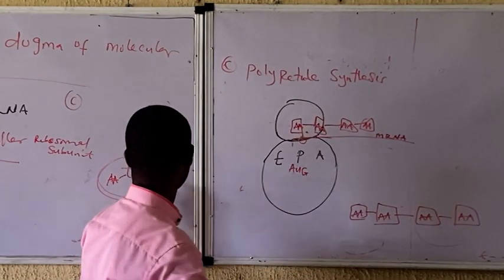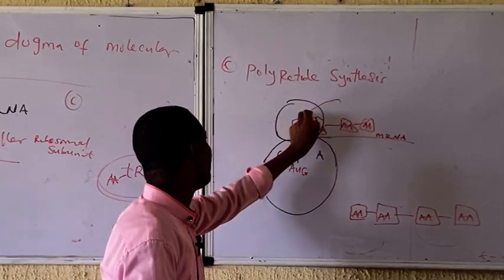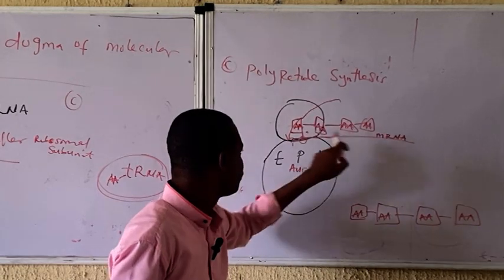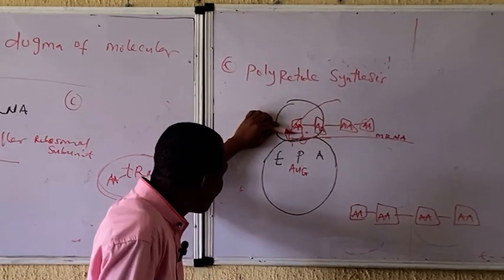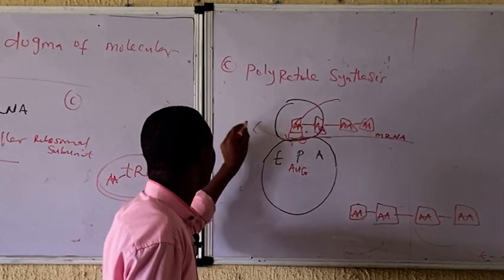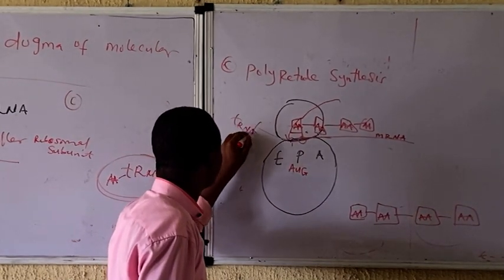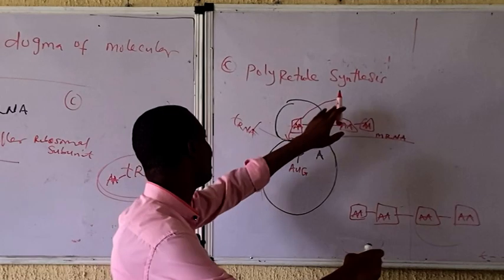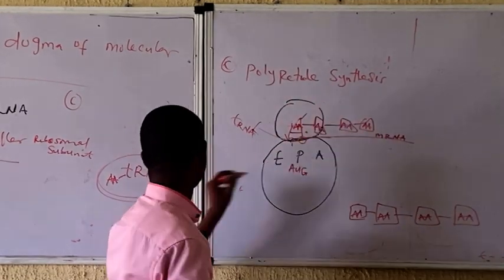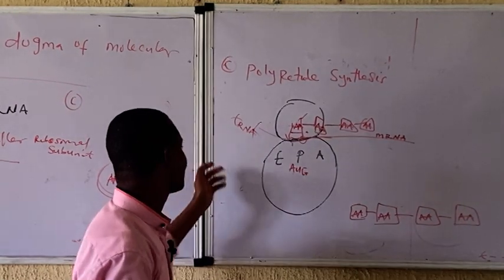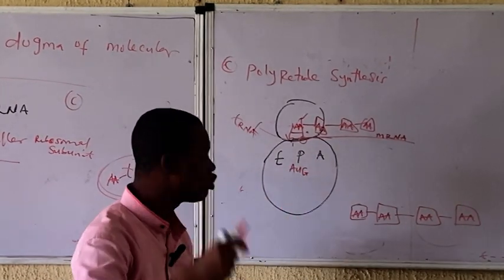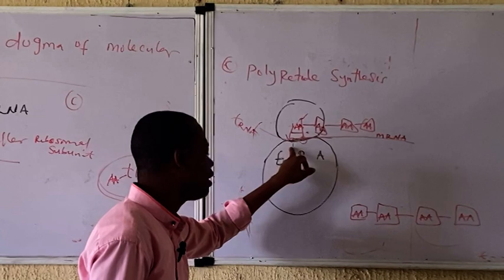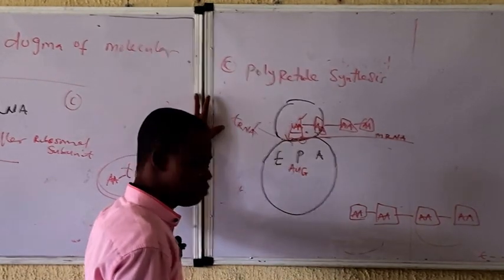tRNA brings the amino acid to the site and reads the codon on mRNA. Once it reads the codon, it drops the amino acid and the tRNA is released. For the start codon, the tRNA comes to the P region, drops the amino acid, and is then released through the exit site.